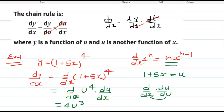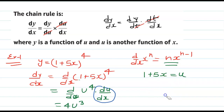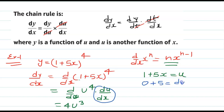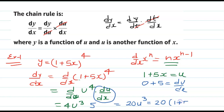Now we need to find du over dx. If we differentiate u equals 1 plus 5x with respect to x, the differentiation of 1 is 0 and the differentiation of 5x is 5, so du over dx equals 5. Our answer is 5 times 4 equals 20u to the power 3. Putting the value of u back, we get 20(1 plus 5x) to the power 3.